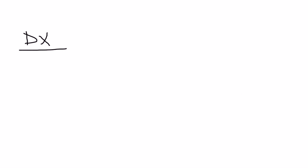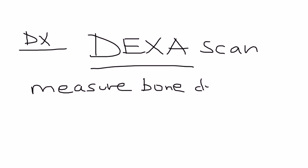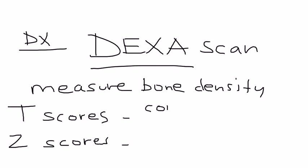How do you diagnose this? The most important test is known as a DEXA scan, which is a very important aspect of the osteoporosis diagnostic workup. This DEXA scan measures bone density by comparing the patient's bone density to the bone density of others. There are two scores: a T-score and a Z-score.